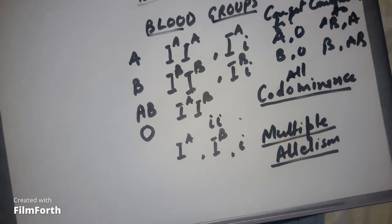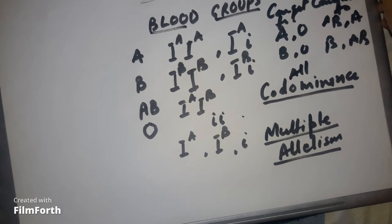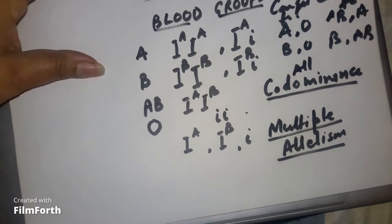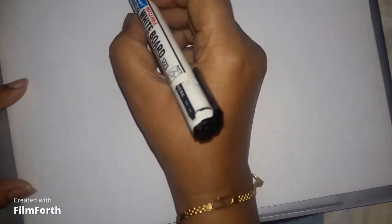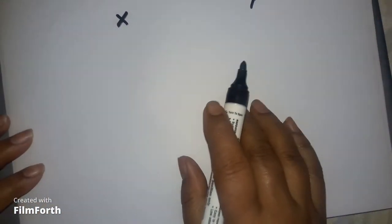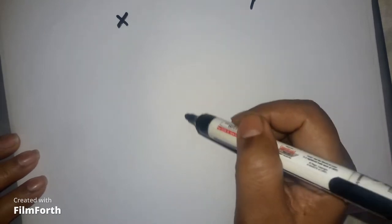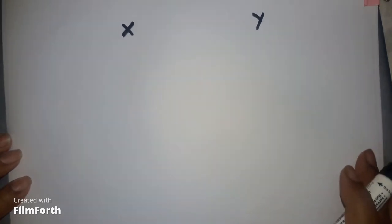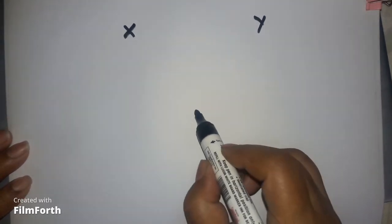Now we will discuss some problems or questions which are asked in the exam regarding blood groups. Here is a very interesting question: Mr. and Mrs. X and Mr. and Mrs. Y have a dispute in the court regarding the ownership of a child whose blood group is O.